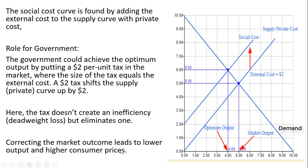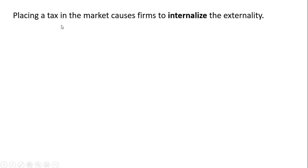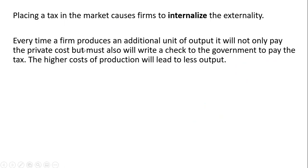Correcting the market outcome leads to lower output and higher consumer prices. Placing a tax on the market causes firms to internalize the externality. Every time a firm produces an additional unit of output, it pays not only the private cost but also writes a check to the government for the tax. The higher cost of production leads the firm to produce less output — this activity is no longer as profitable.